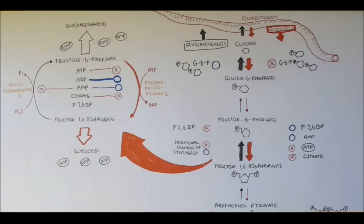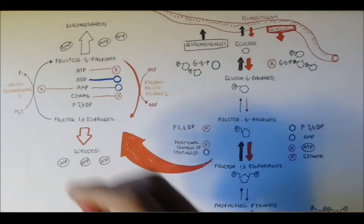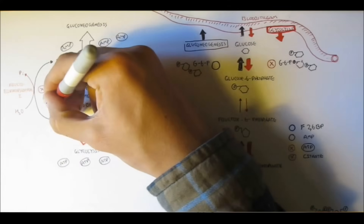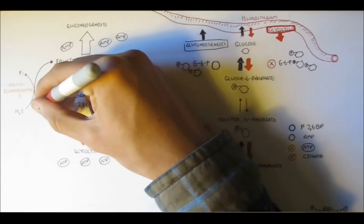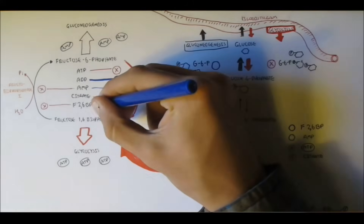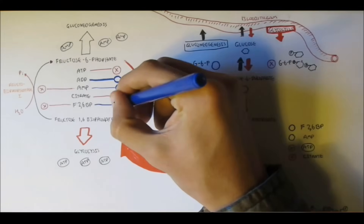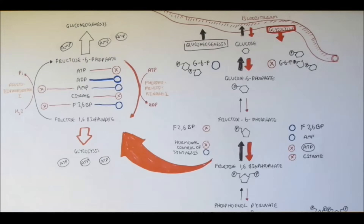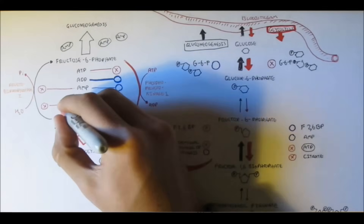Most importantly, fructose 2,6-bisphosphate — a product — will inhibit fructose bisphosphatase 1 but stimulate phosphofructokinase 1. So fructose 2,6-bisphosphate will promote glycolysis but inhibit gluconeogenesis.